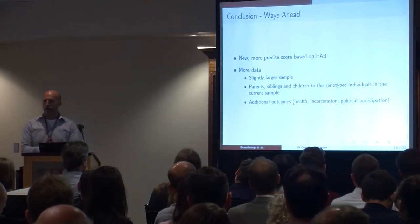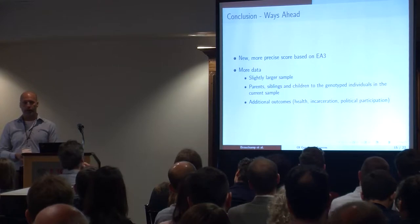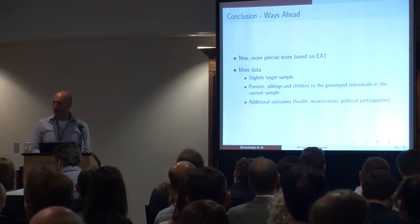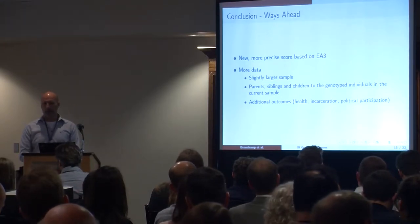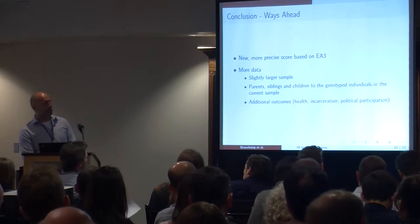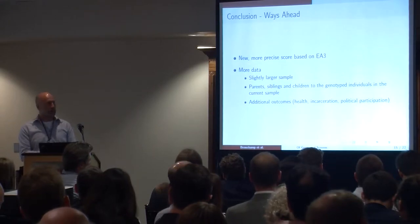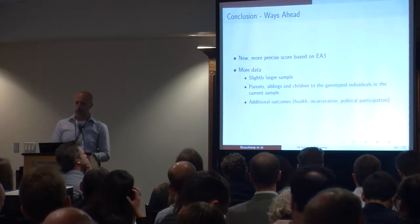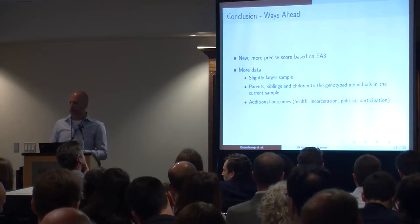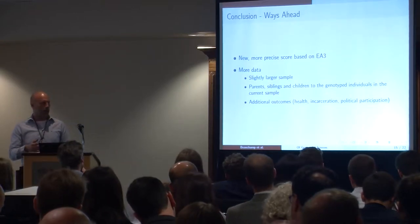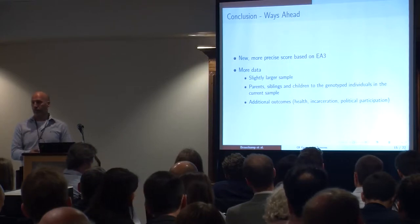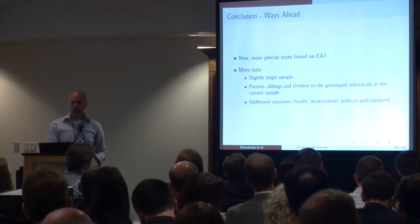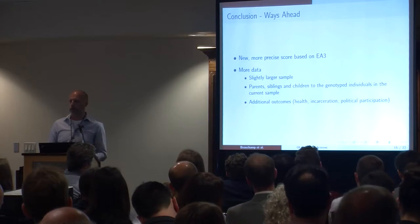To conclude, at least for the female samples, estimates are consistent with the signaling story: the reform forces low-ability individuals to get somewhat more education, which in turn incentivizes higher-ability individuals to get even more education, yielding a payoff in terms of higher incomes. This is very much work in progress. Next steps include using a more precise polygenic score based on the ongoing EA3 work, obtaining more data from Statistics Sweden to allow a larger sample, and incorporating information about parents, siblings, and children to test intergenerational effects and additional outcomes such as health measures, criminal behavior, and political participation.